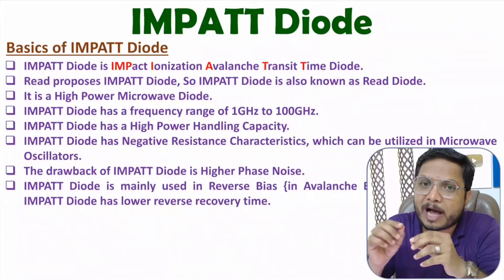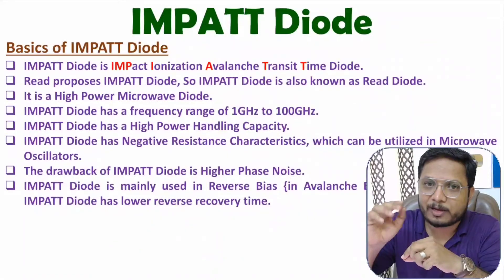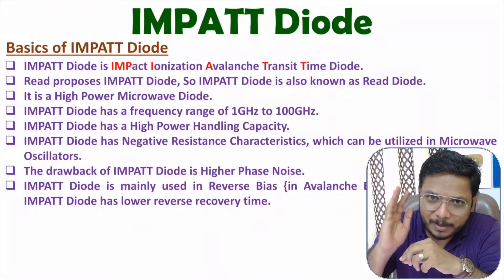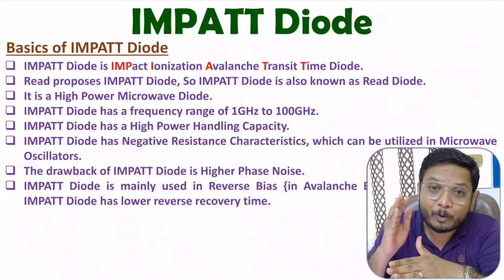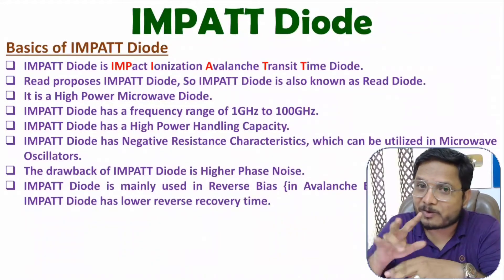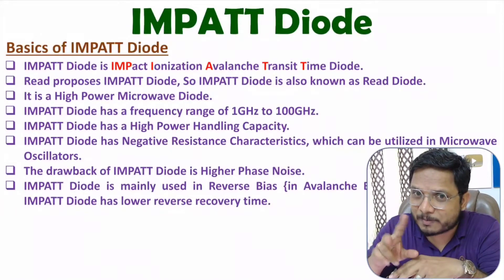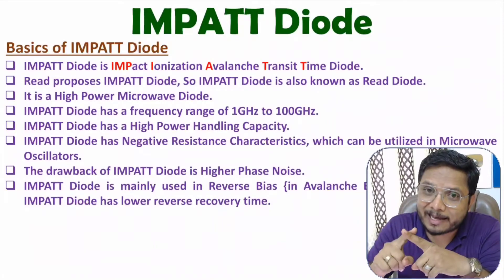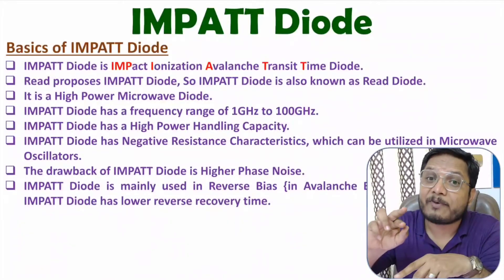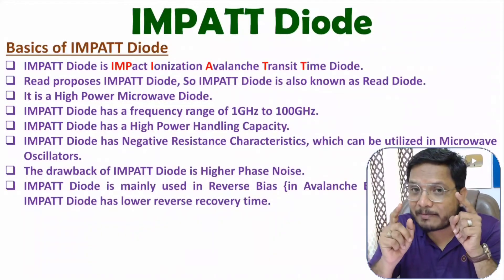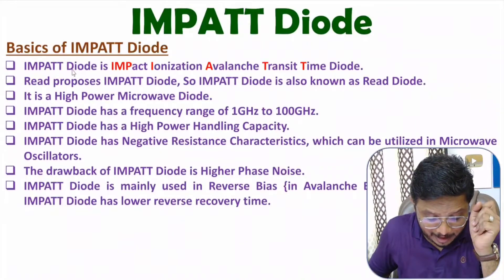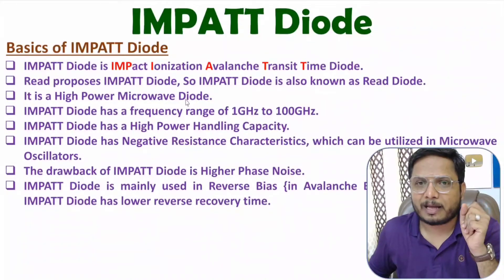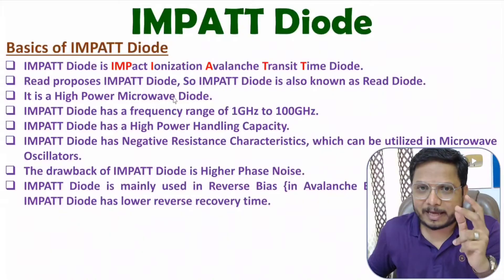In breakdown, humongous current flows, and IMPATT diode has lower reverse recovery time giving faster switching speed. Higher current combined with faster switching speed is why IMPATT diode is a high power microwave diode.